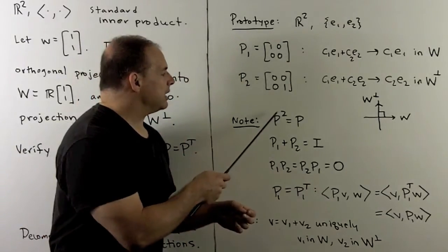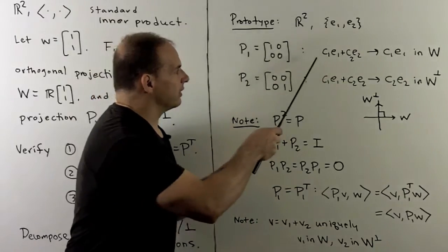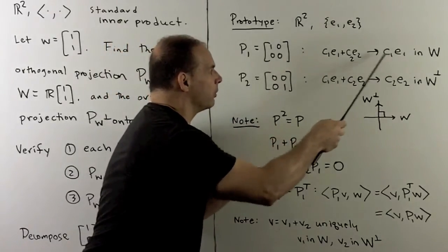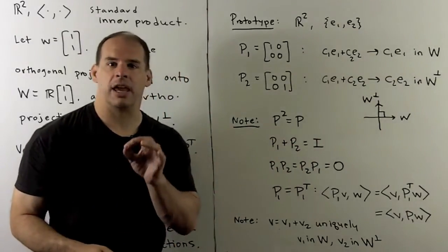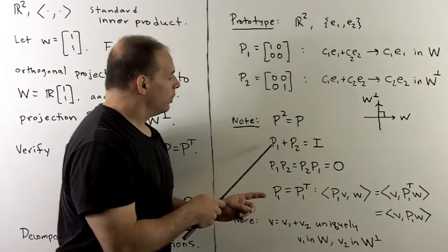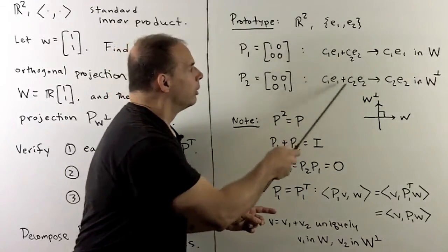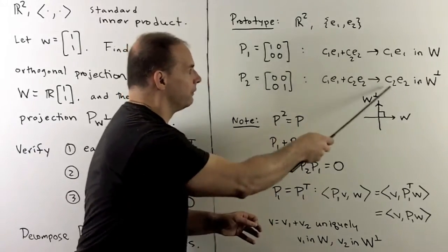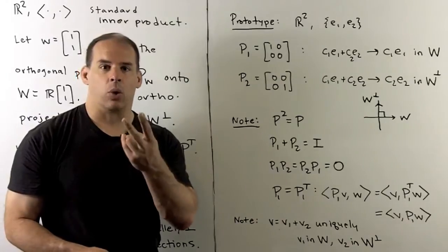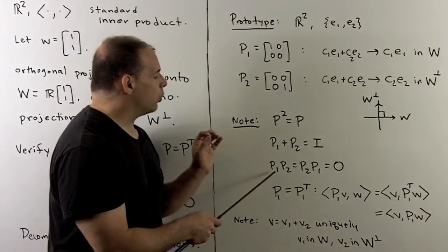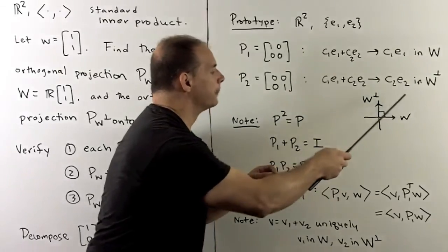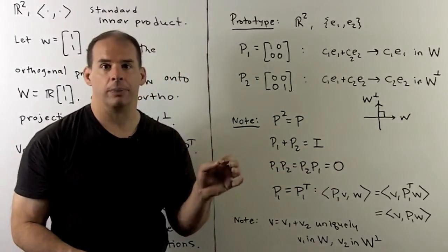How do we interpret these? For P² = P: if I apply P twice, we peel off the part with E1, then peel off the part with E1 again. Peeling off the part with E1 twice is the same as doing it once, so P² = P. Then if we peel off the E1 part and the E2 part and put them back together by summing, we get back our original vector — that's P1 + P2 = identity. Finally, if we project down to P1 and then project down to P2: projecting to P1 removes the W⊥ part, so projecting onto W⊥ afterward gives zero, and the same holds in the other order.